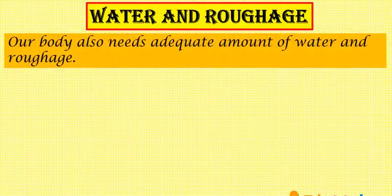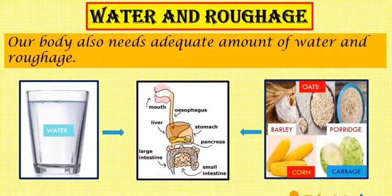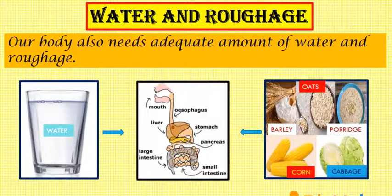Now let's move on to our next topic, that is water and roughage. Along with the 5 main components of food, our body also needs the right amount of water and roughage. Roughage means dietary fiber. Water plays a very important role, so we should drink plenty of water, as it acts as the medium of transport of nutrients inside our body and also allows food to pass easily through the digestive system.